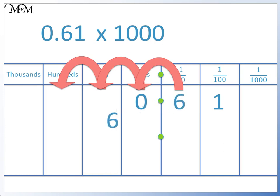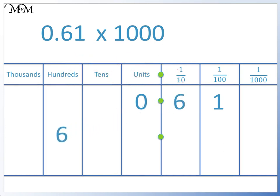The 1 will then follow. There is a space in the units column, so we write in a 0. The answer is 610.